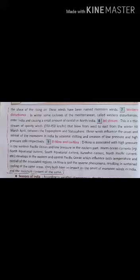8. El Niño and La Niña — El Niño is associated with high pressure in the western Pacific Ocean. La Niña is just the reverse phenomenon, resulting in sustained cooling of the same areas. Both currents affect the advance and retreat of the monsoon. El Niño is a warm ocean current which occurs once every 5 to 8 years during the Christmas season in the Pacific Ocean. La Niña is a counterpart of El Niño which occurs every few years in the Pacific Ocean.